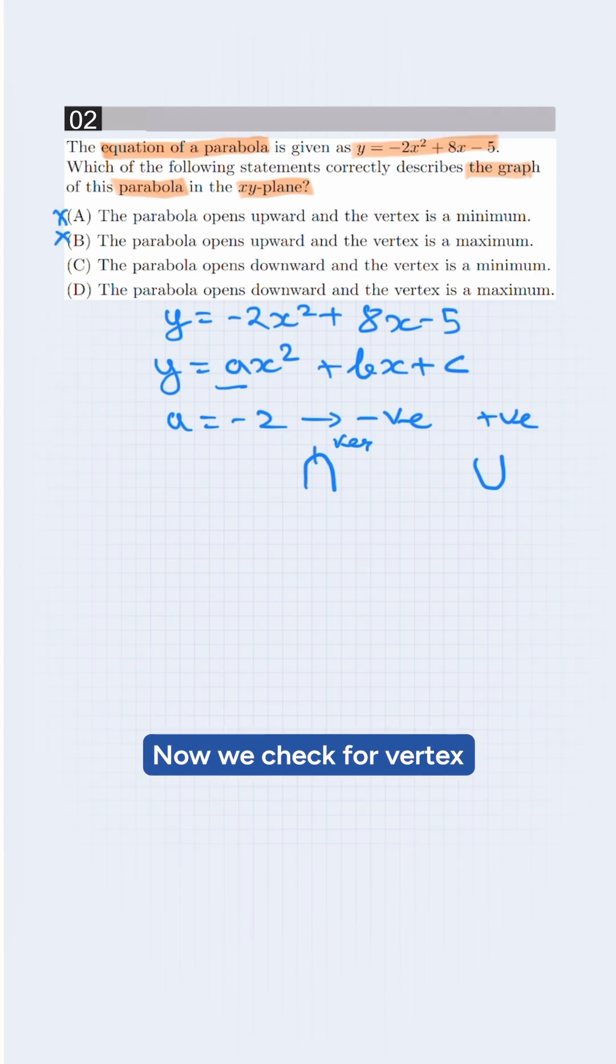Now we check for vertex, whether it is maximum or minimum. If parabola opens downwards, the highest point on the graph is the vertex. Therefore, the vertex represents the maximum value.